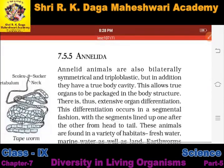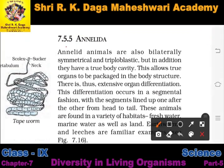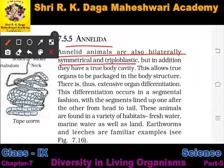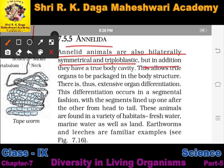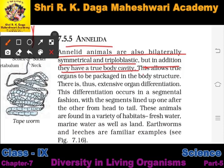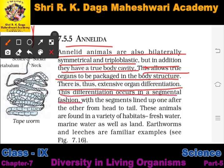The next category is Annelida, the fifth category of the Animalia classification. Annelid animals are also bilaterally symmetrical and triploblastic. But in addition, they have a true body cavity. This allows true organs to be packaged in the body structure, and there is extensive organ differentiation. This differentiation occurs in a segmental fashion.